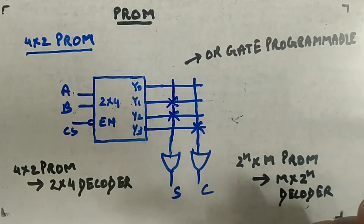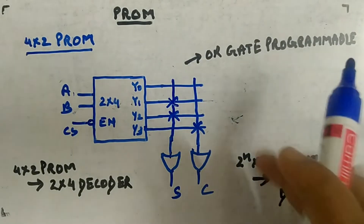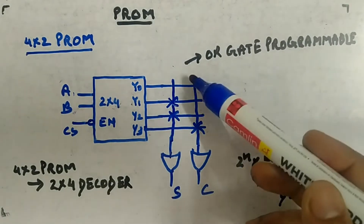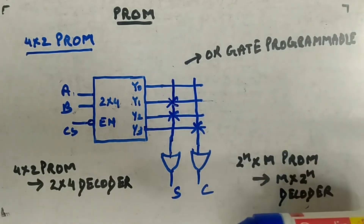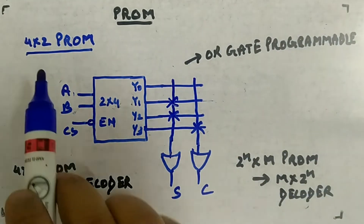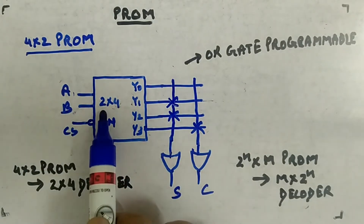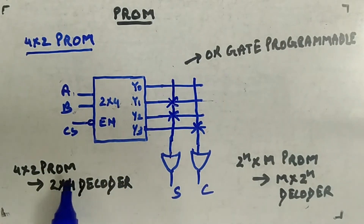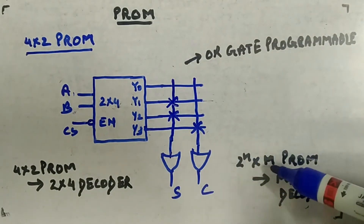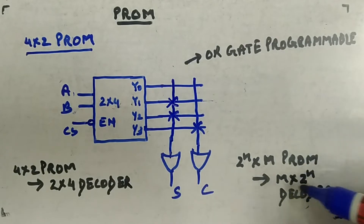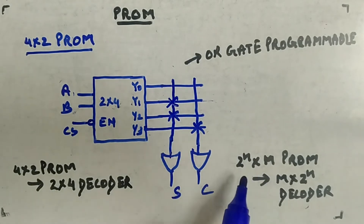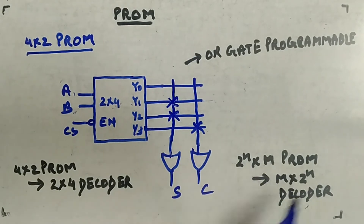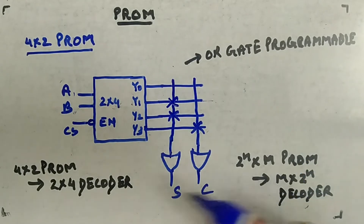Hopefully you can see how to design a function from PROM and how it is programmable. One important thing: for a 4×2 PROM you require a 2×4 decoder. In general, a 2^n × M PROM will require an N × 2^n decoder. Wait - I made a mistake there. The correct formula is: a 2^n × M PROM requires an N × 2^n decoder, not M × 2^n. Please make that correction. Sorry about that.